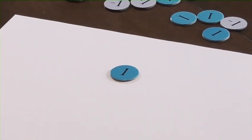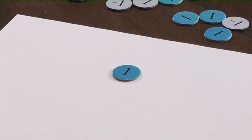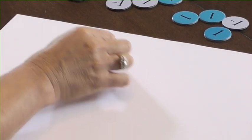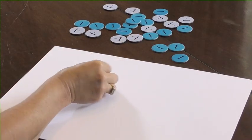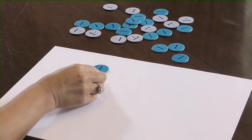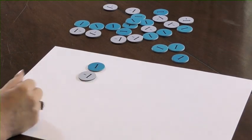And a key concept when we're using algebra disks is the zero pairs concept. So, if you have one and a negative one, we've got zero, so we've got a zero pair.